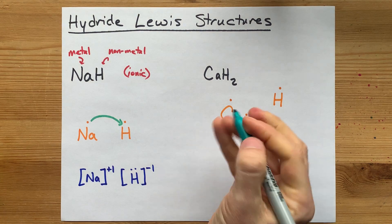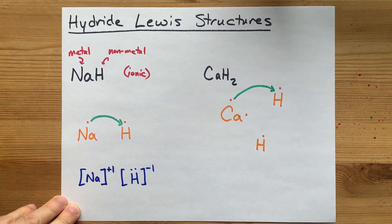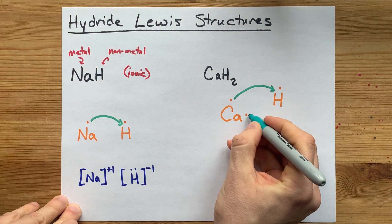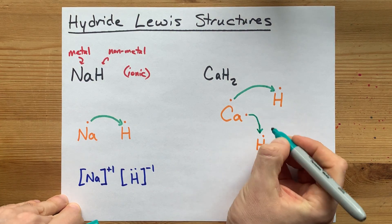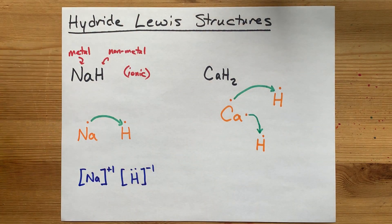Let me draw that transfer for you. Calcium, the metal, donates its electron to the non-metal. Calcium, the metal, transfers its electron to the non-metal, just like all other ionic compounds.